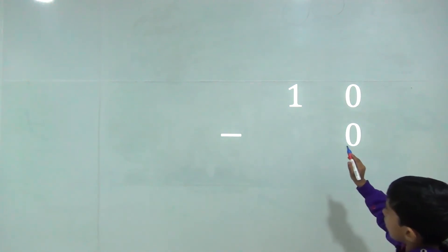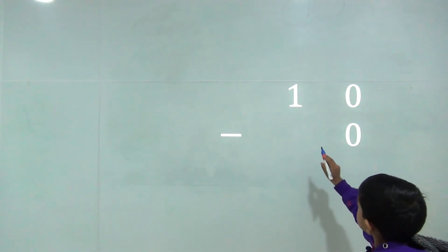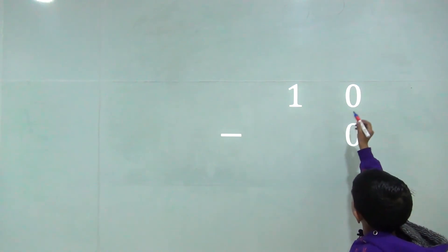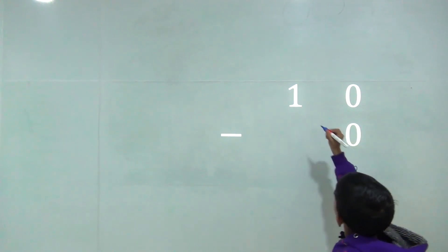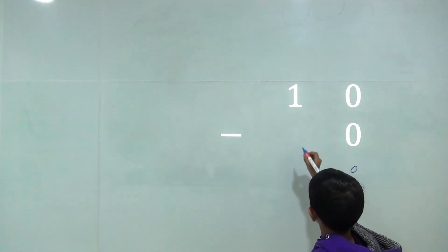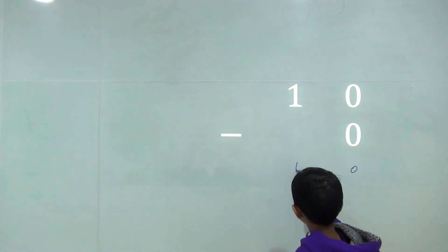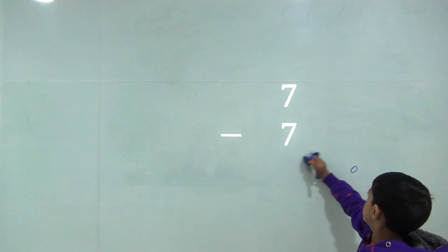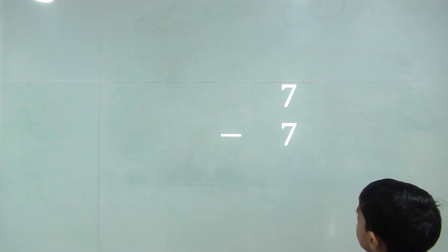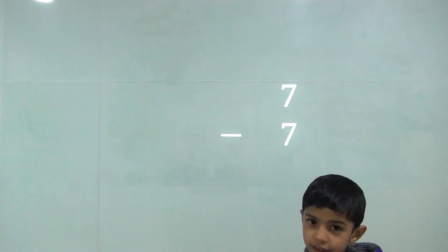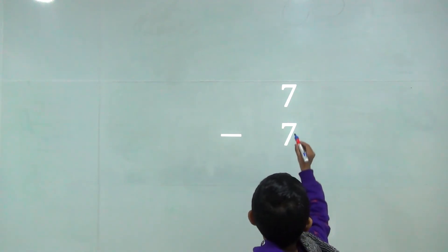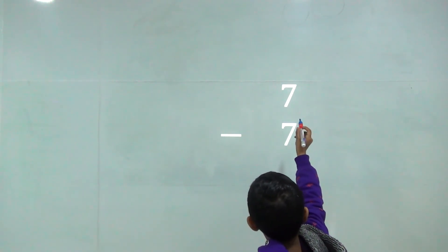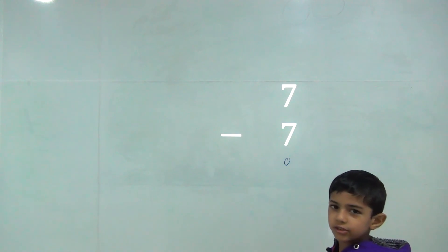Now subtracting zero. Ten minus zero. Zero minus zero is equal zero and one minus zero is equal one. So the answer would be ten. Seven minus seven is equal zero and one minus zero is equal one.